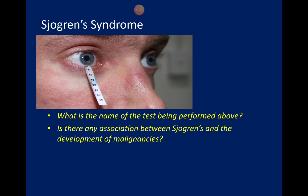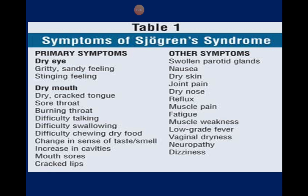Sjögren's syndrome is another example of a connective tissue disorder. It is a sicca syndrome — dryness of the mucous membranes, especially the eyes and mouth, is a very prominent feature. Remember that mouth dryness can result in secondary problems such as difficulty swallowing. On history-taking, try to distinguish between true dysphagia and difficulty swallowing due to secondary causes such as dryness of the mouth.